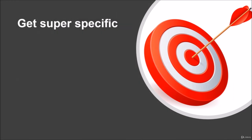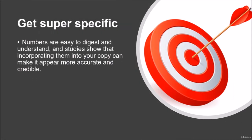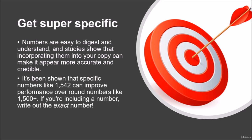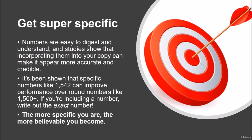Get super specific. Numbers are easy to digest and understand, and studies show that incorporating them into your ad copy can make it appear more accurate and more credible. It's been shown that specific numbers like 1,542 can improve performance over round numbers like 1,500+. If you're including a number, write out the exact number. The more specific you are, the more believable you become.